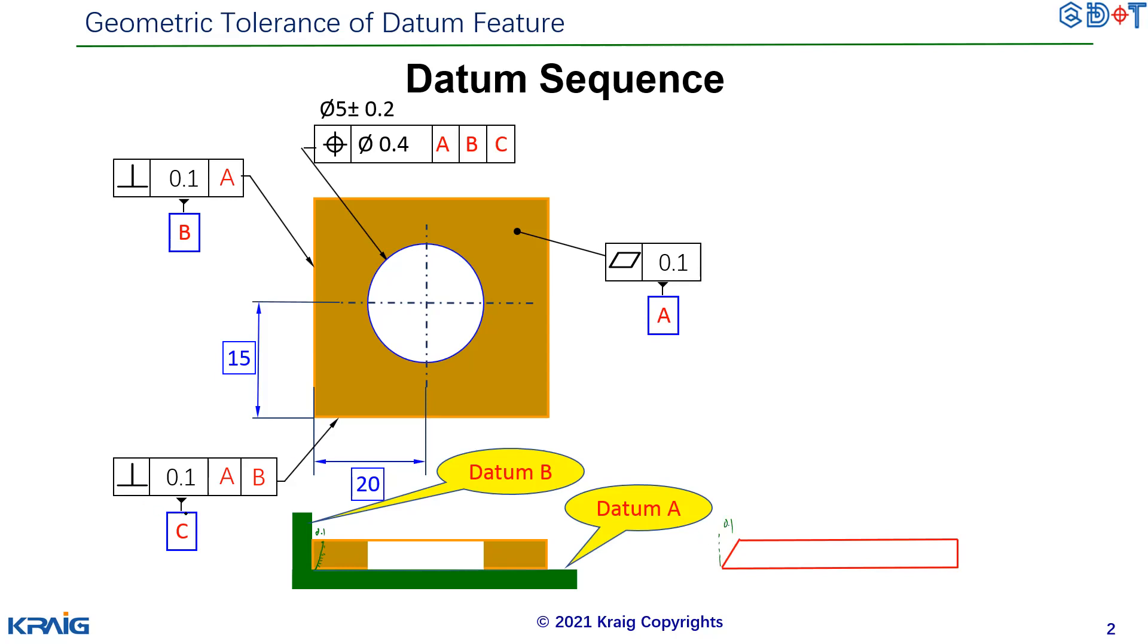Same thing for datum C. Datum C is allowed to have a perpendicularity to datum A and B. So that's why we call this orientation tolerance to the datum feature, especially to the second one and the third one. So let's consider the second one datum B.